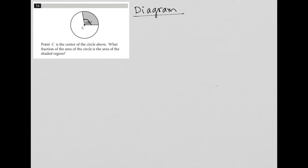So the question says, point C is the center of the circle above. What fraction of the area of the circle is the area of the shaded region? So the wording here is not great. It's a lot of ofs and ofs and ofs. However, this really does lend itself to translation. So this kind of really fits our translate word problem strategy.